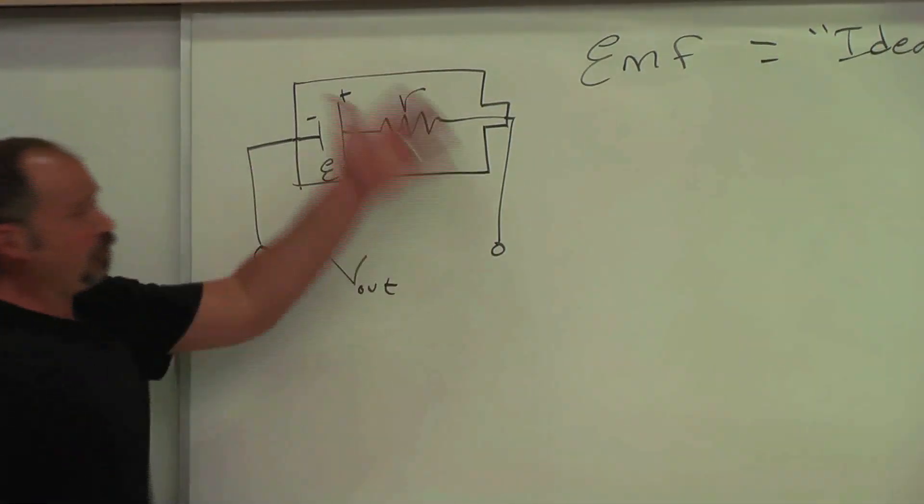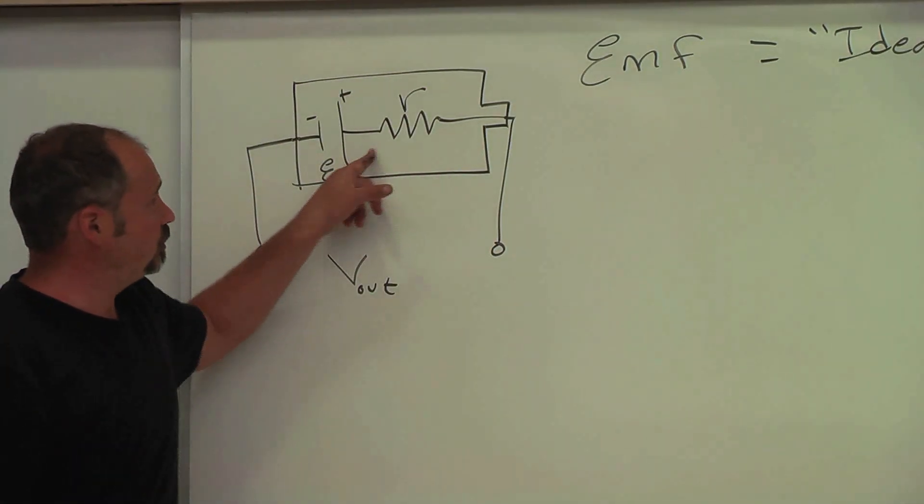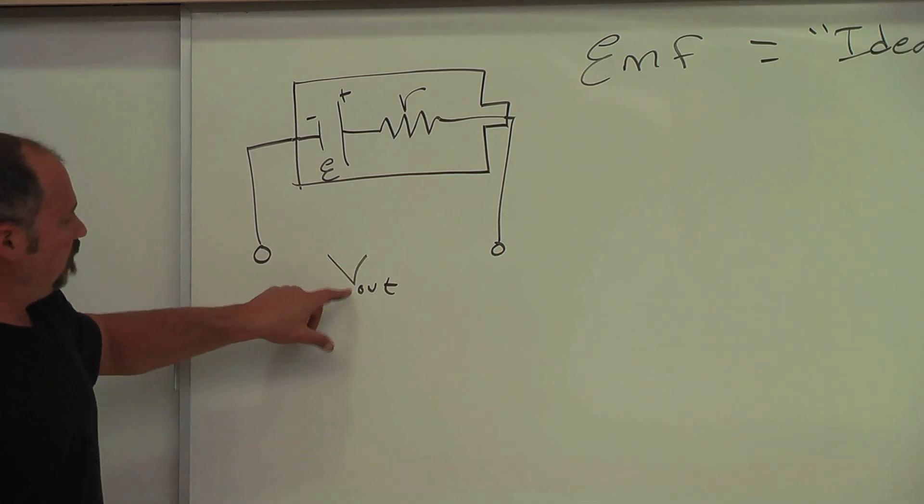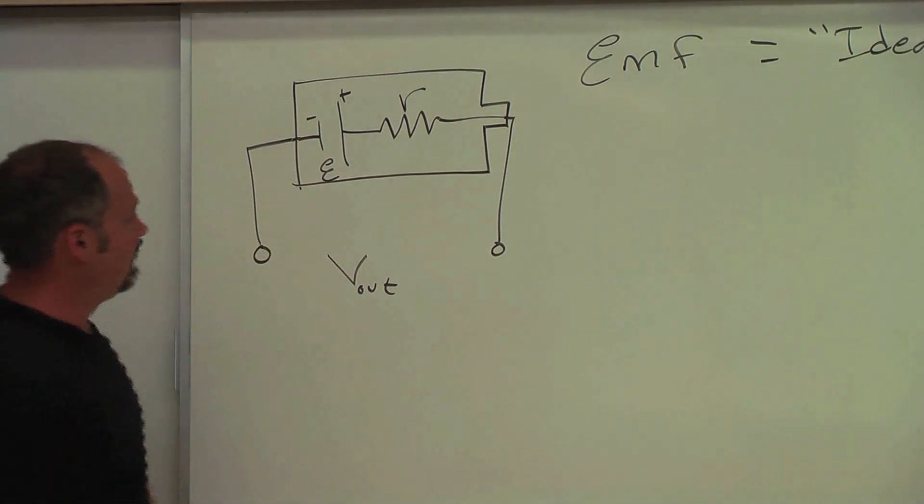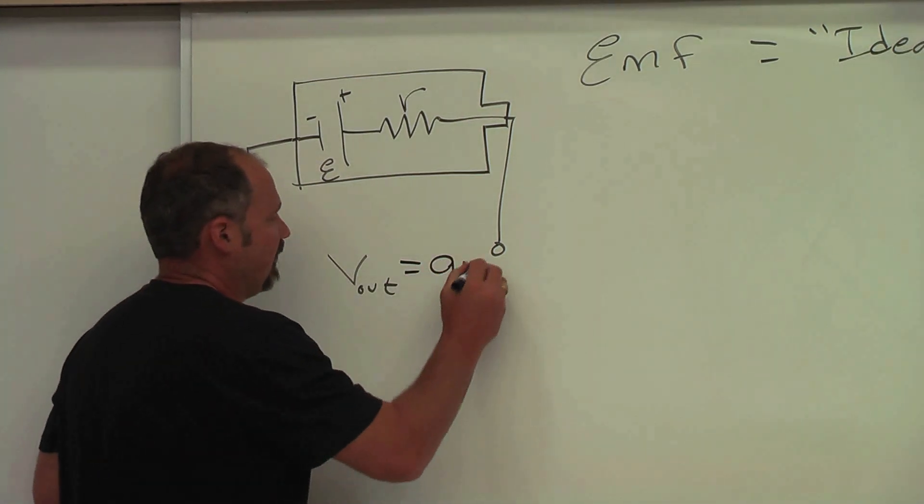Well, when there's no current running through it, there's no voltage drop here. So the voltage you get out is the same as the ideal, and we measured that to be 9 volts.